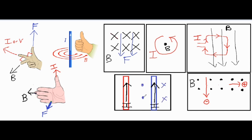Then it comes out of the page on the other side. For the red wire on the left, if your thumb is going upwards, your fingertips go inward on this side and curl outward on the other side. These red x's are influencing the blue wire and these blue dots are influencing the red wire. We'll come back to that problem because we'll need a different right-hand rule for the next step.